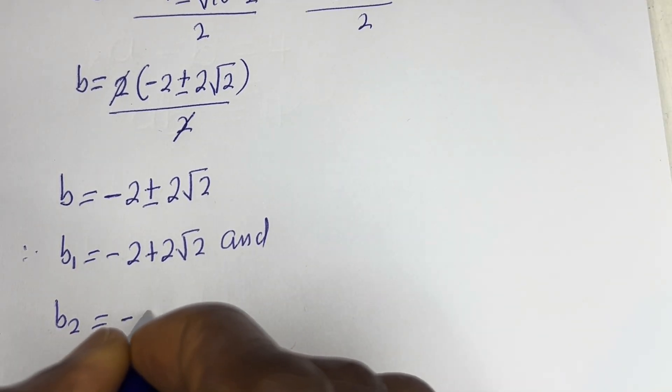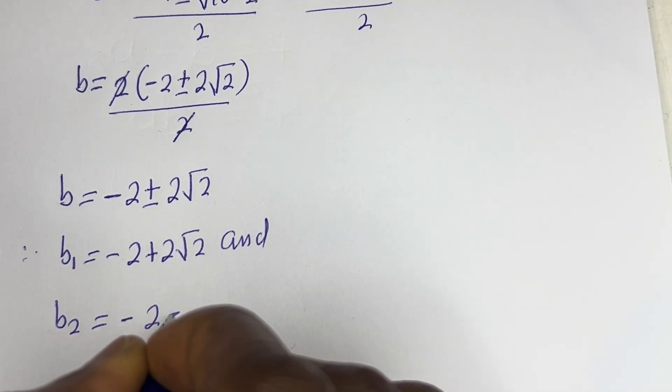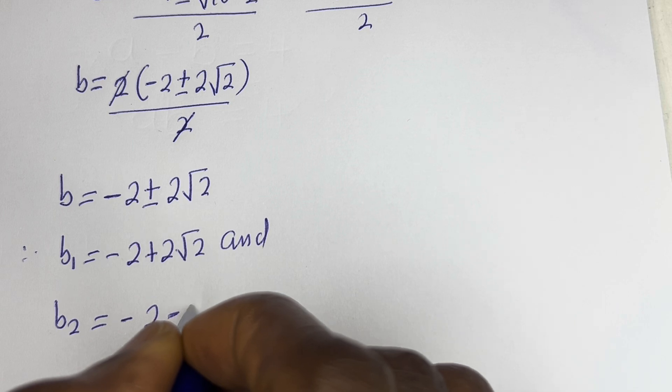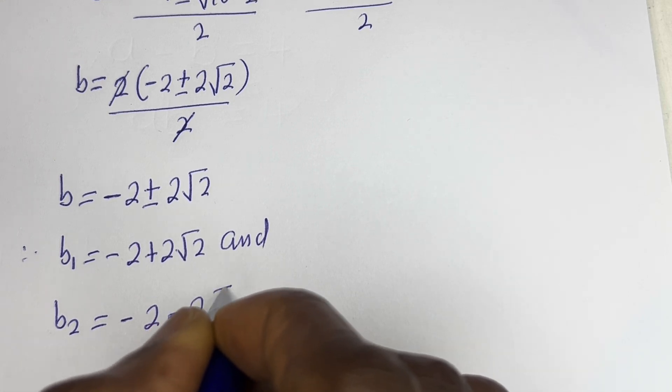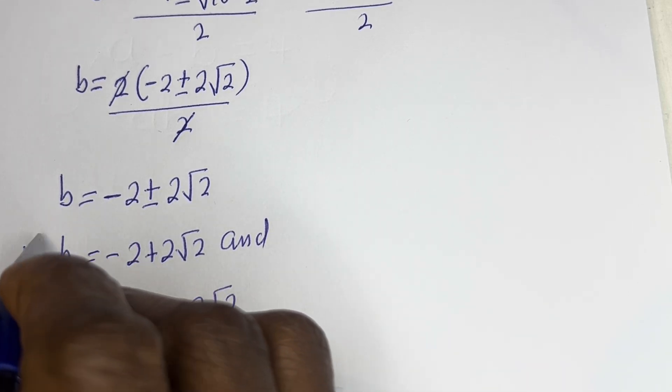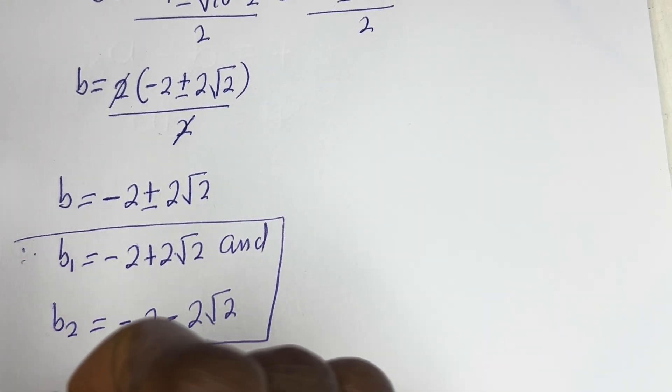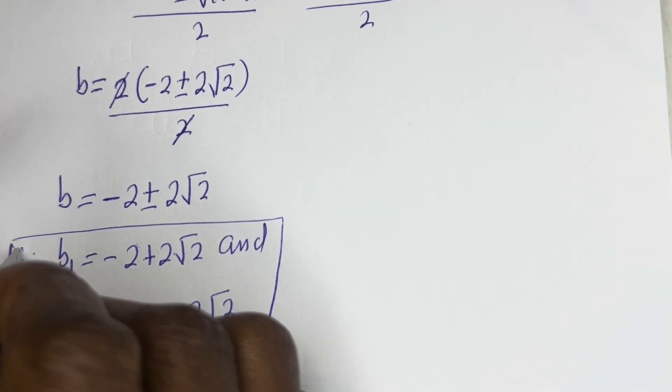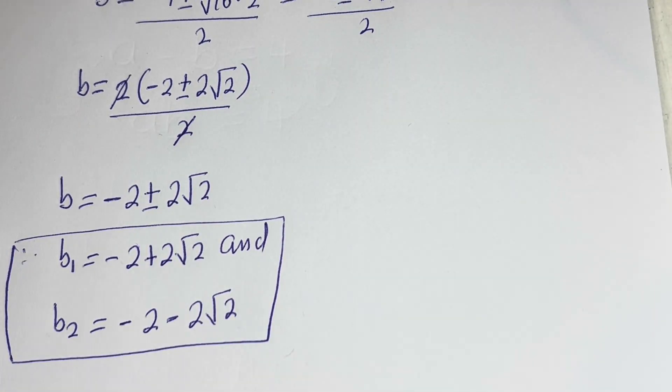So the values of b are: b₁ equals minus 2 plus 2 root 2, and b₂ equals minus 2 minus 2 root 2. These are the values of b.